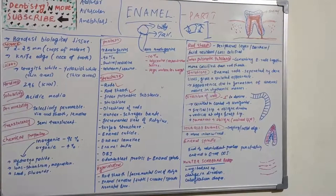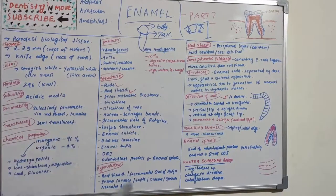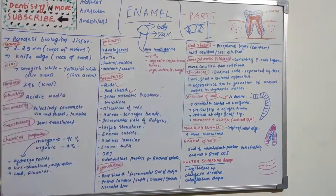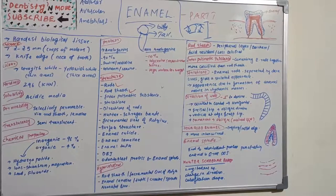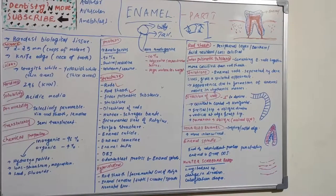The next structure is the rod sheath, which is a thin peripheral layer that is darker than enamel rods and less calcified with more organic content. Because of this, it is more acid resistant than the enamel rods — less calcification means less demineralization when acid acts on the minerals. It appears as an incomplete structure in electron microscopic examination.